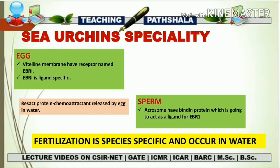Now let's look at some specialities of sea urchin. The vitelline membrane has a receptor named EBR1, which acts as a receptor requiring a specific ligand. Its position is on the vitelline membrane of the egg. The acrosome of the sperm contains the bindin protein, which acts as the ligand for EBR1. So EBR1 is on the vitelline membrane of the egg, and bindin protein is in the acrosome of the sperm. When EBR1 and bindin come in contact with each other, fertilization takes place.